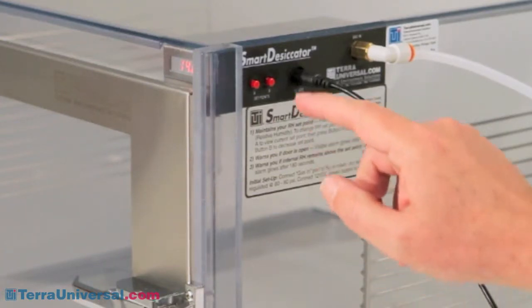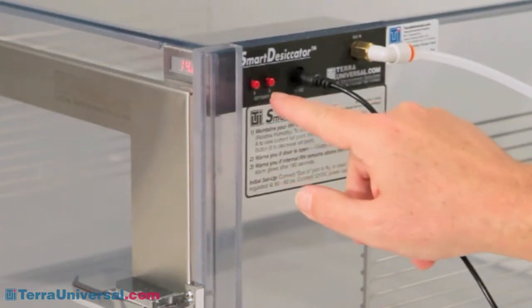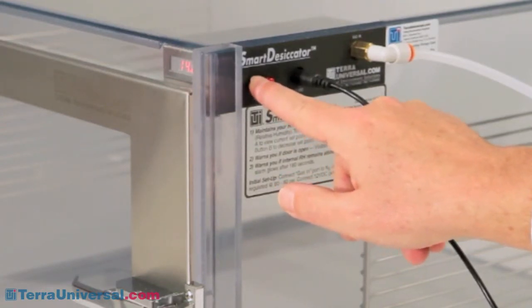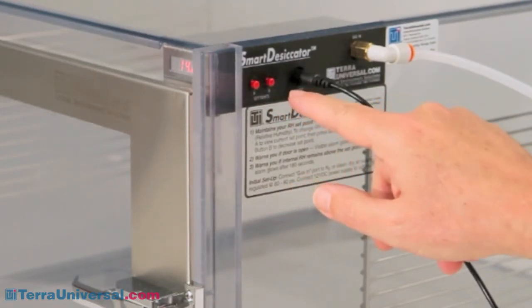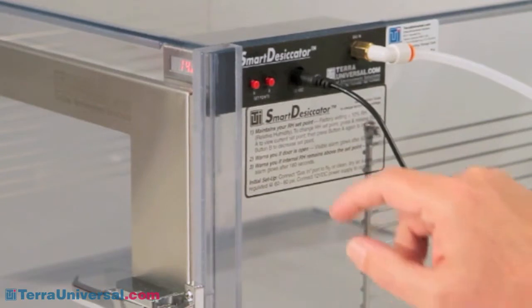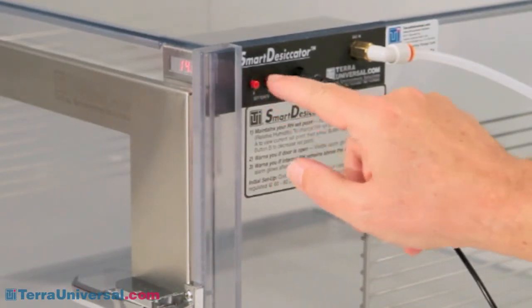To establish a humidity setpoint, you press the A or left button once. This will display the current setpoint. Pressing on it twice will let you raise this setpoint and pressing the B or right button will let you decrease it. After a four-second delay in which no buttons are pressed, the system will save this new setting.